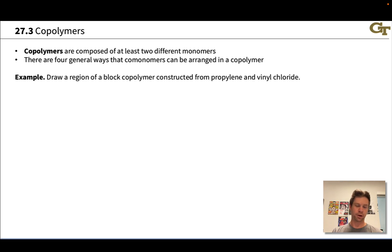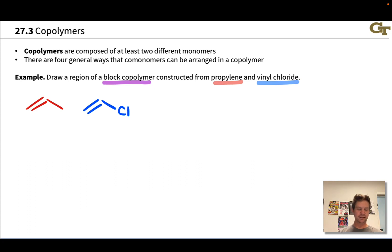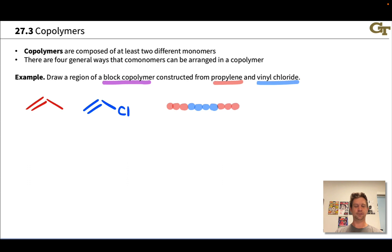Now let's draw a block copolymer constructed from a propylene monomer and a vinyl chloride monomer. Let's remind ourselves of the structures: propylene is propene, an alkene linked to a methyl group, and vinyl chloride is an alkene linked to a chlorine. We want to draw these in a block copolymer, so let's think about this on an abstract level first.